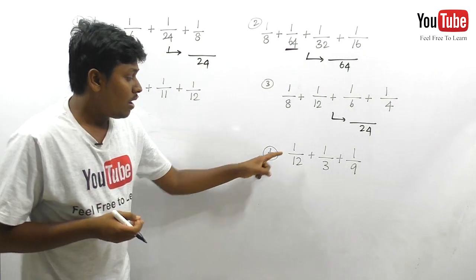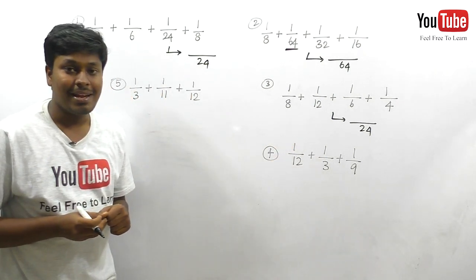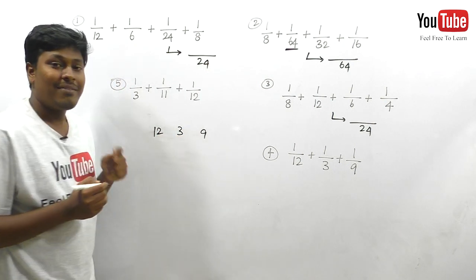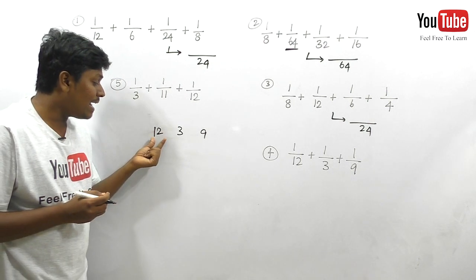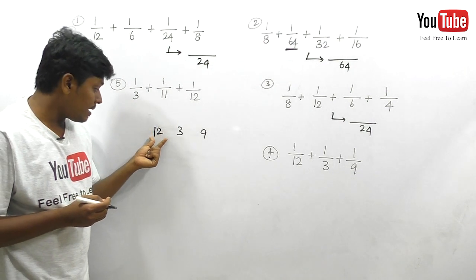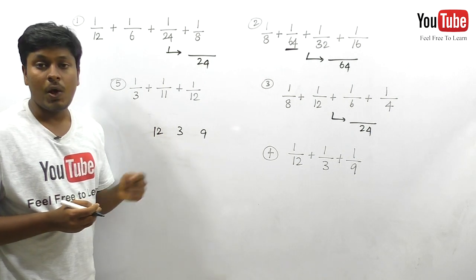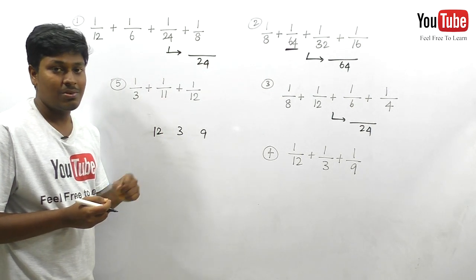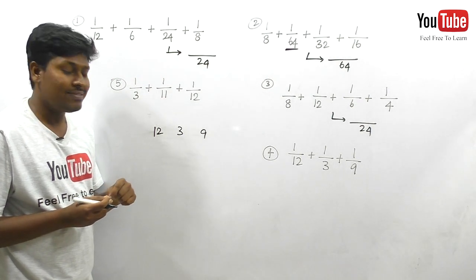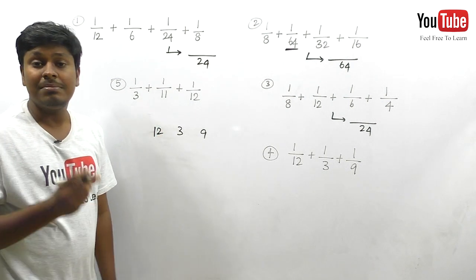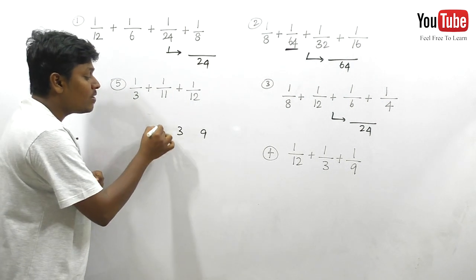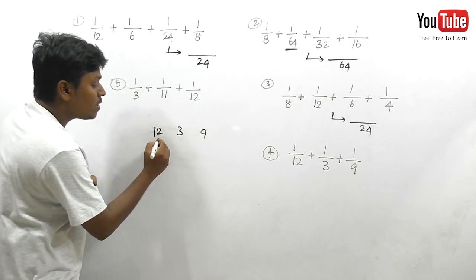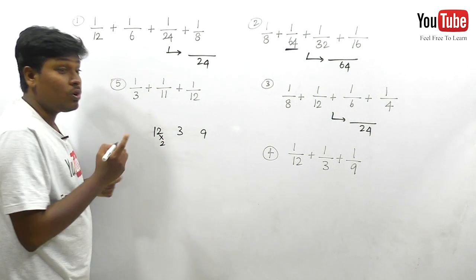Let me move on to the fourth question: 1/12 + 1/3 + 1/9. The numbers are 12, 3, and 9. Rule 1: take the larger number, which is 12, and check whether 12 is divisible by all other remaining numbers. 4 × 3 = 12, so 12 is divisible by 3. But 12 is definitely not divisible by 9, so 12 will not be the LCM. Rule 1 fails.